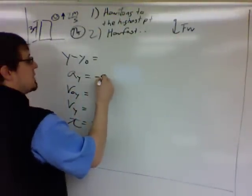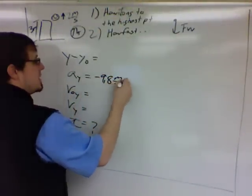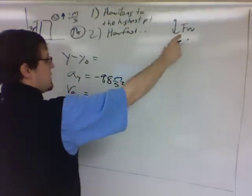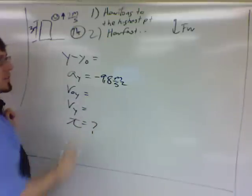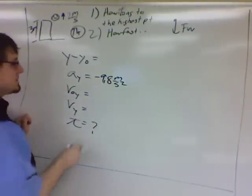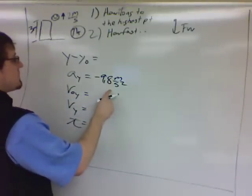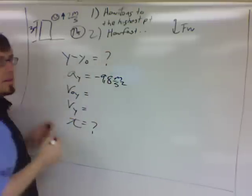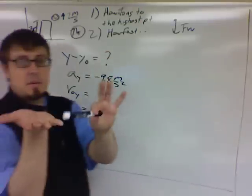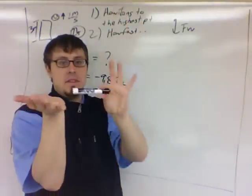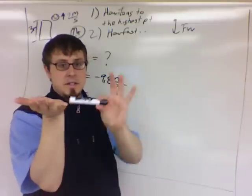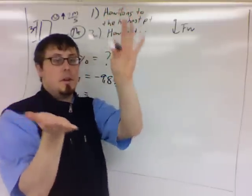So acceleration, this one's pretty straightforward, negative 9.8 meters per second squared. If that's our free body diagram, this will always be our acceleration, if we're on Earth, that is. The displacement, don't know that, because this is the distance from here up, not the distance we're going down. It's the displacement from here to here, which we don't know.